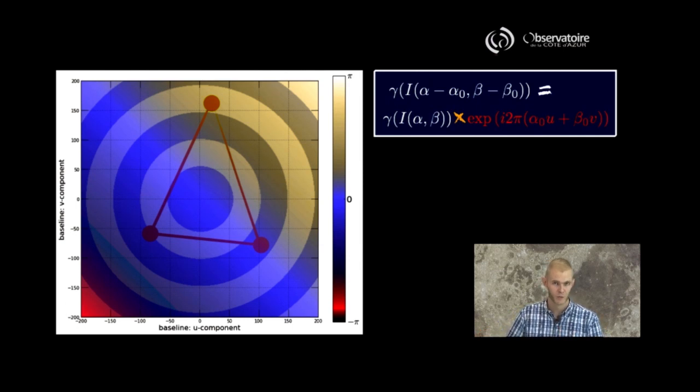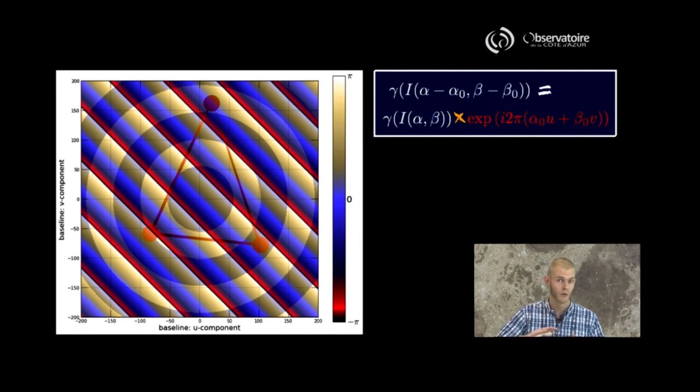And so here is one example here where the object is not too far off to the side, and this is what it looks like when it begins to go farther away. We saw that as you go far away off center, you introduce faster and faster modulations.